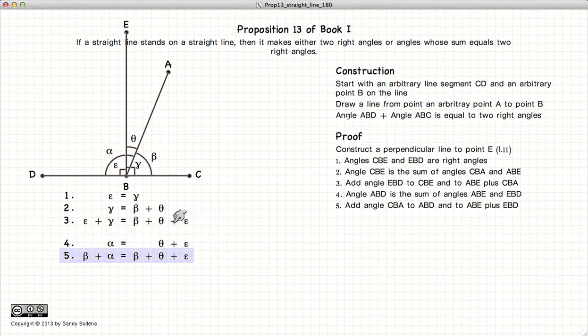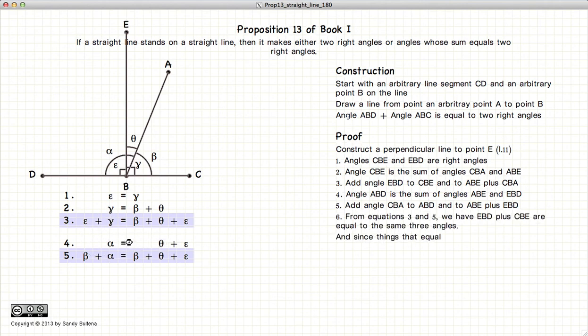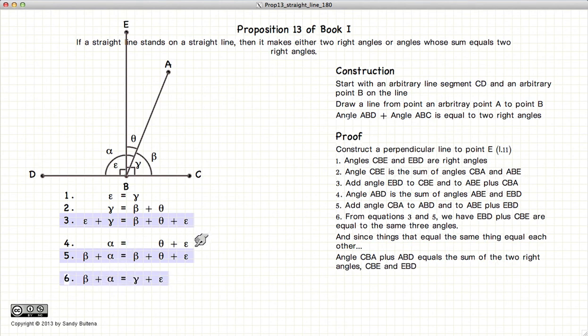Now if we look at equations 3 and 5, we see that on the right hand of the equation we have beta plus theta plus epsilon. So if epsilon plus gamma is equal to this and beta plus alpha is equal to this, then these two sides of the equation are also equal, which gives us that beta plus alpha equals gamma plus epsilon.